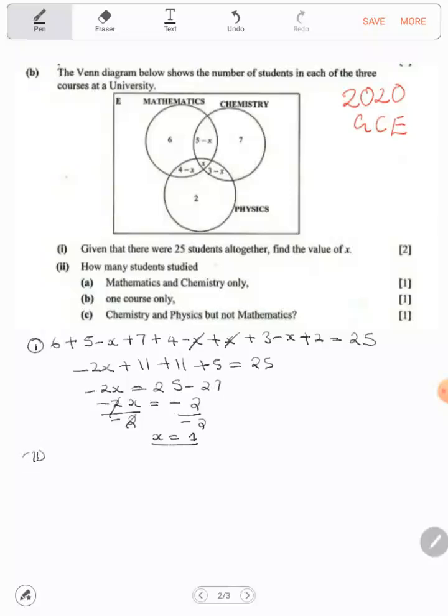Then part 2: math and chemistry only. We're talking about this part only. There we have 5 minus x, so this will be 5 minus 1, equal to 4 students.